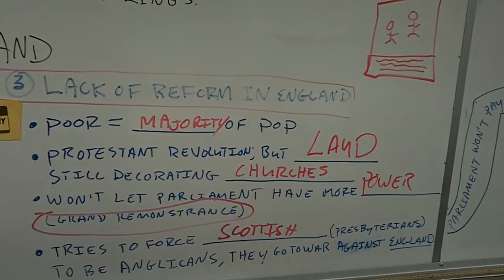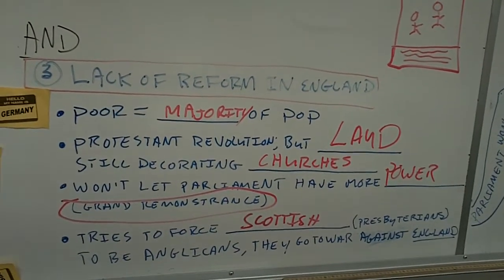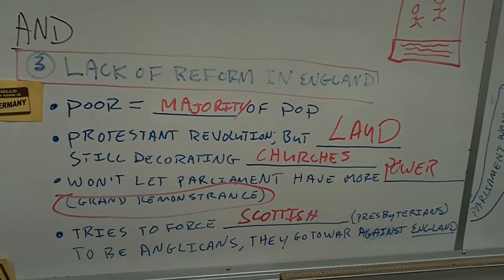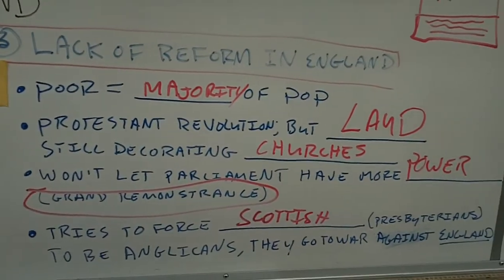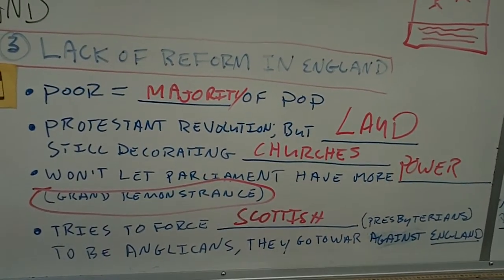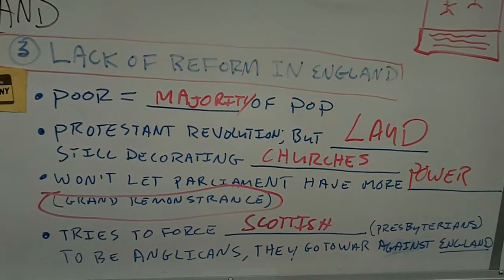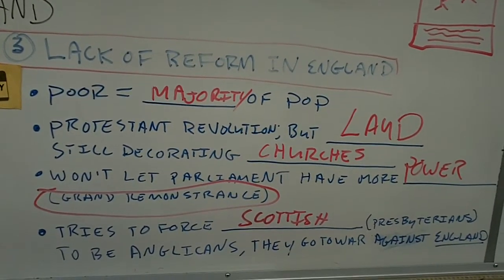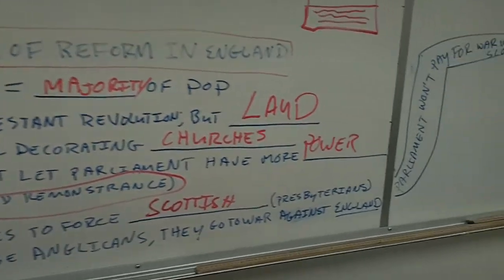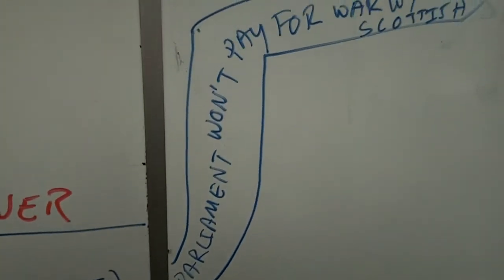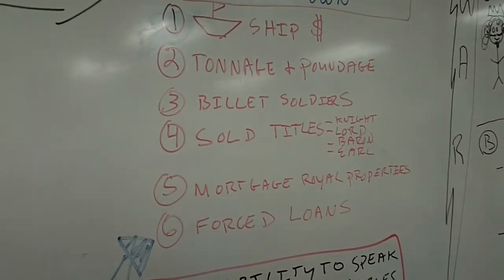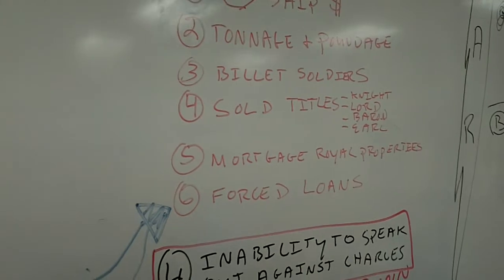Charles also won't let Parliament have more power — we'll talk about something called the Grand Remonstrance, which would basically limit the power of the King, but that's for later. At one point, Charles very unwisely decides to tell the Scottish, who are Presbyterians, to worship more like Anglicans, forcing them to worship in the way he wants. This upsets the Scottish and leads to a war. Because there's a war, Charles wants to raise money through Parliament, through forced loans, and all of these things — but he needs Parliament because he needs more money than he can raise on his own.